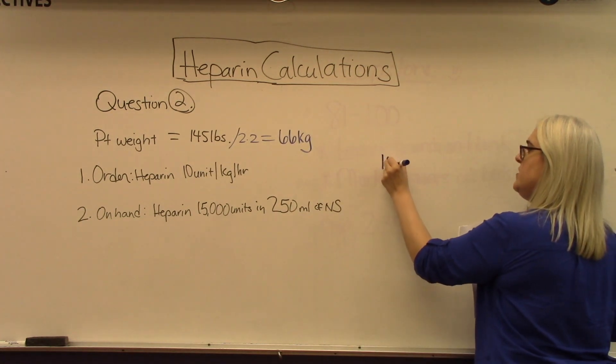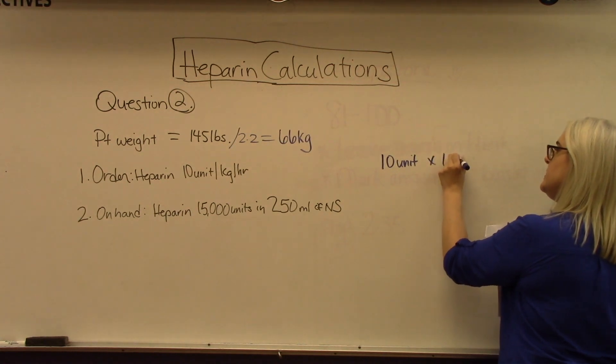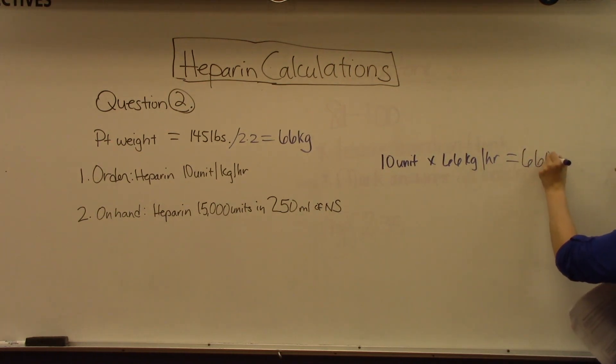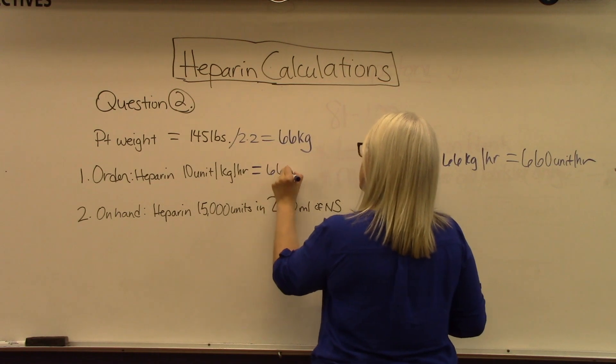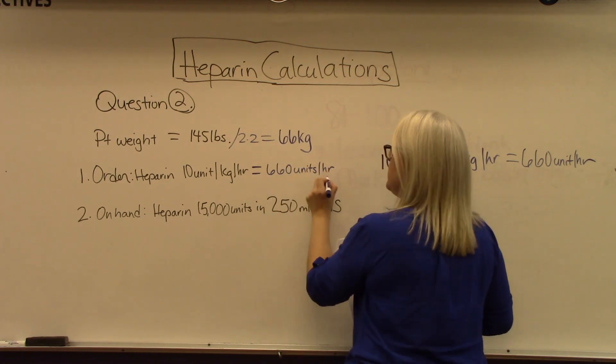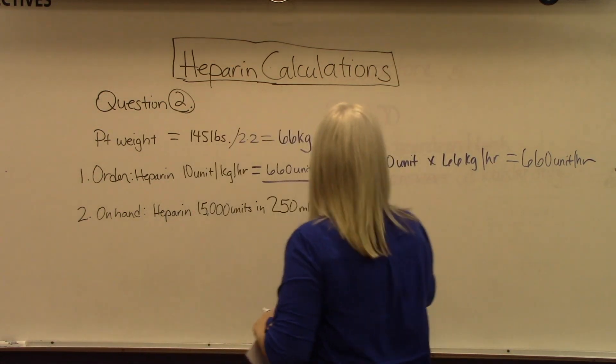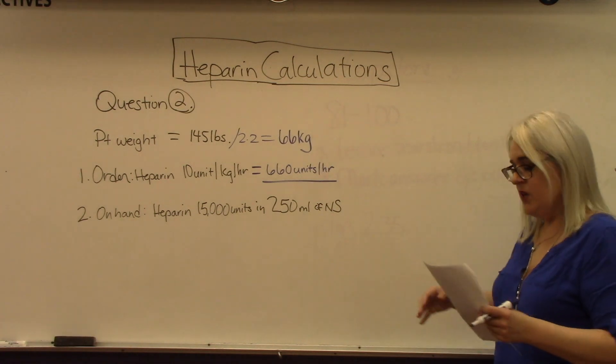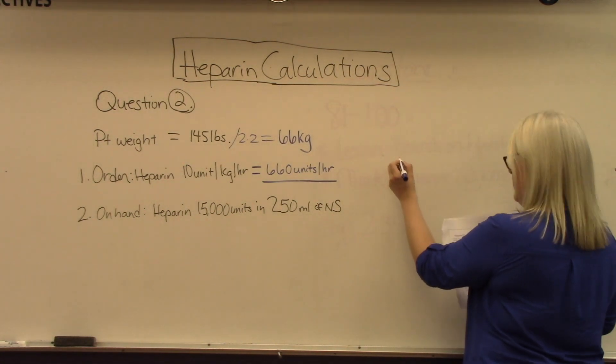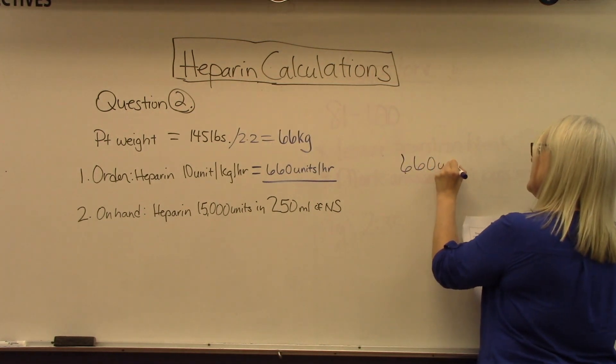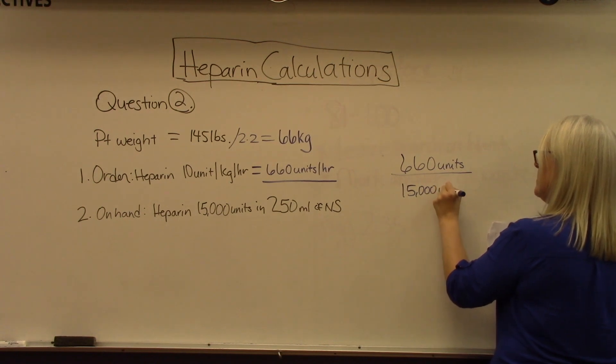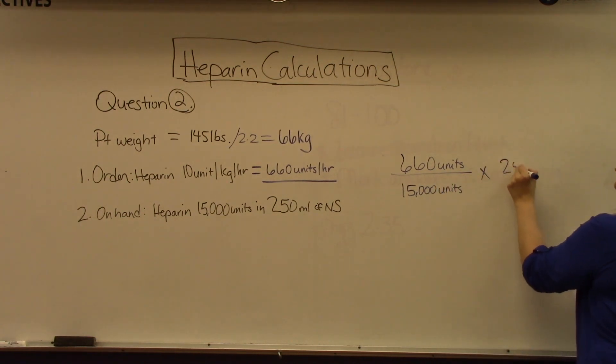Our next step is to take those 10 units times 66 kilograms per hour, which equals 660 units per hour. So that's our first answer. With our second part of this question, we have to calculate how many milliliters to administer. This is our standard formula where we have our desired dose of 660 units.